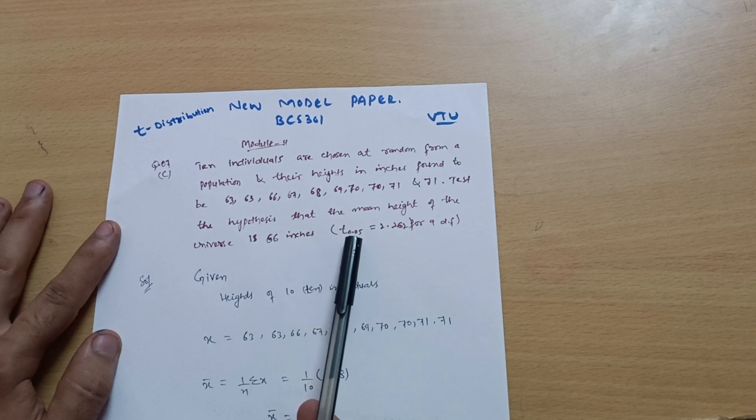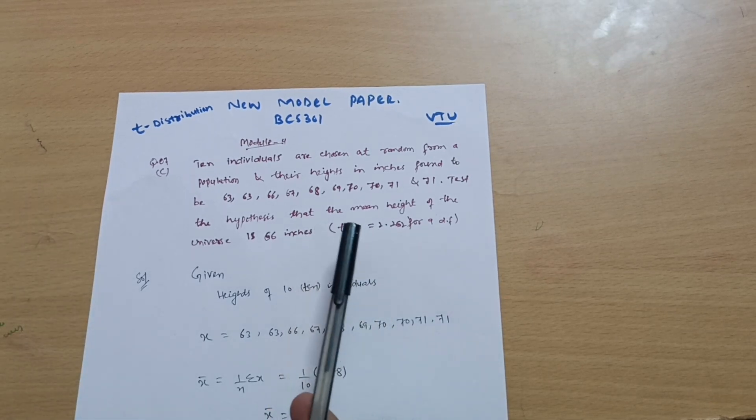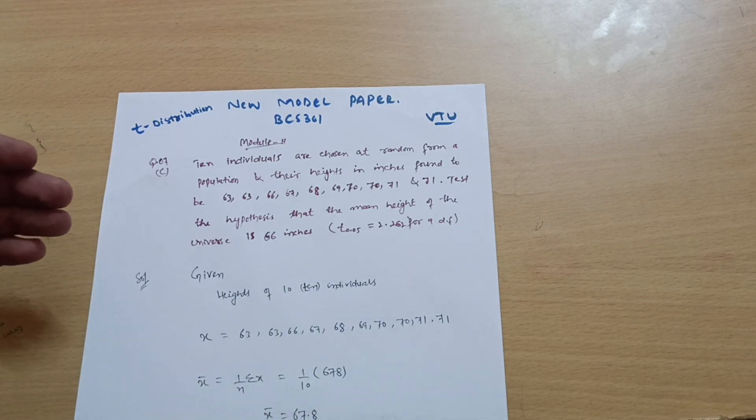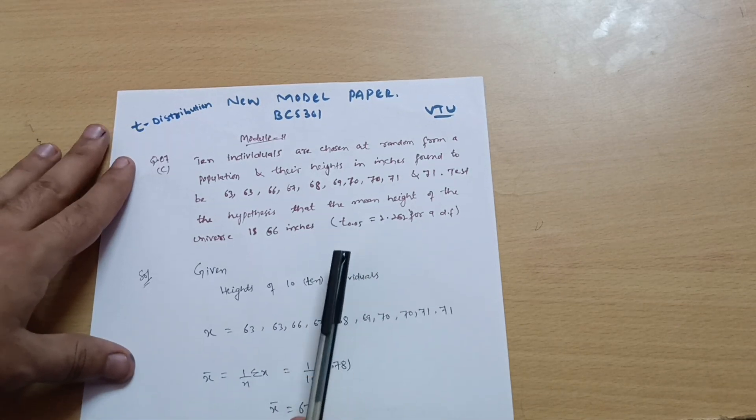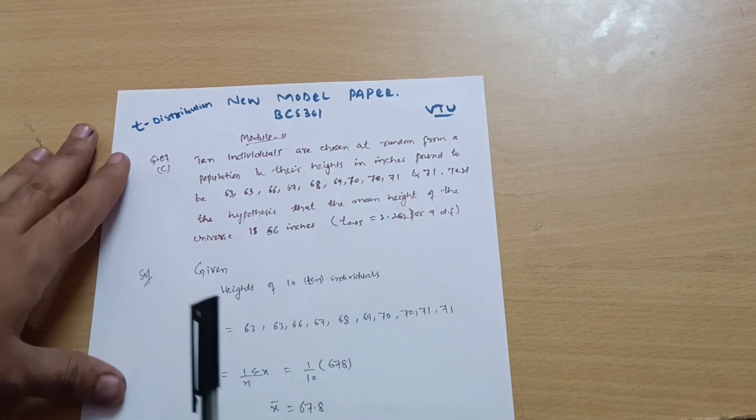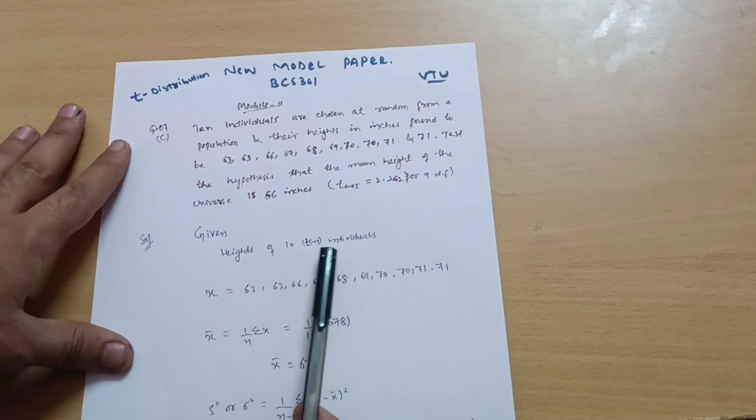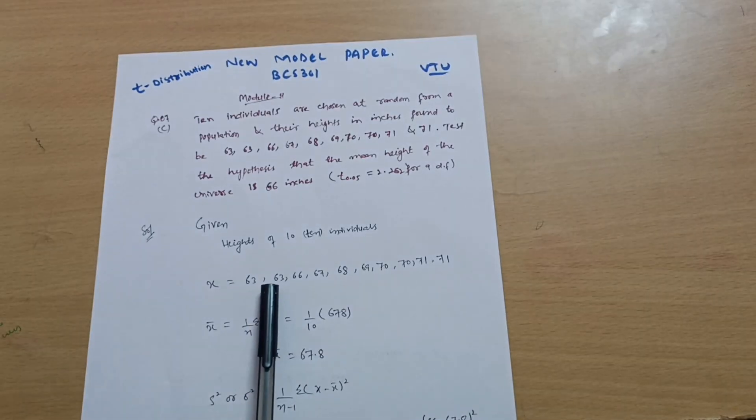t at 5 percent level of significance is given 2.262. So this is the t-distribution problem. I think we have solved one problem on this particular concept, it was on student's IQ. So it is a similar problem to that one. We have to use same formulas in this particular question also. So while writing down the solutions, given heights of the 10 individuals, let me call it x. x is given, these are the heights of the individuals.